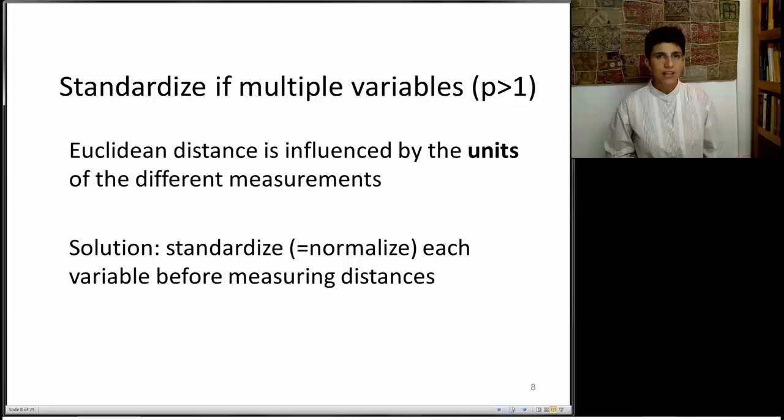You might have noticed that the number that we got at the end is highly influenced by one particular measurement. That measurement was the expenses. And the reason is, the scale, we have those in dollars, the scale of expenses is much larger than anything else. So expenses is taking over the distance between universities, which means that the distances are reduced to simply expenses. If we're going to cluster based on these numbers, we're just going to get expensive universities, middle expensive, and cheaper universities.